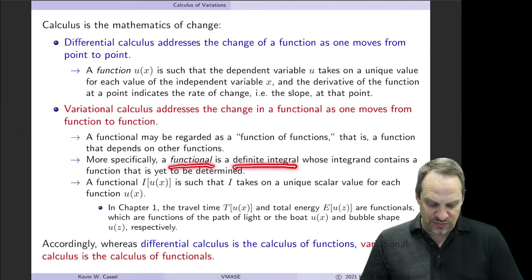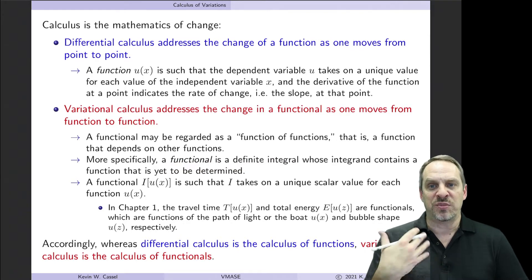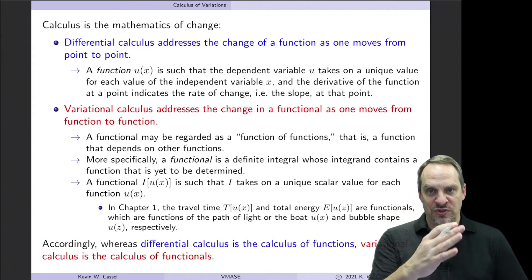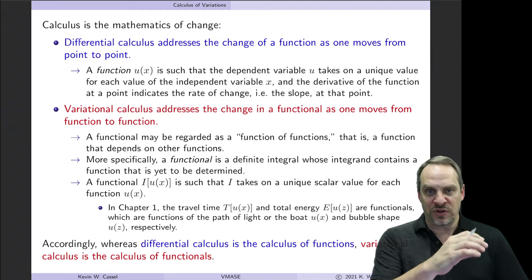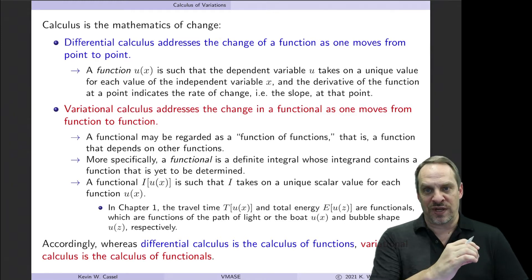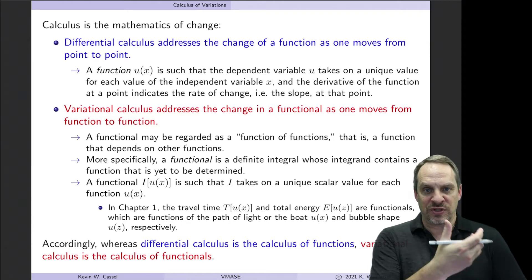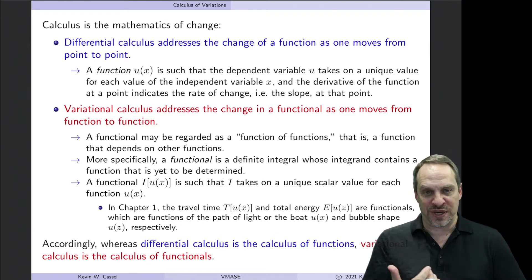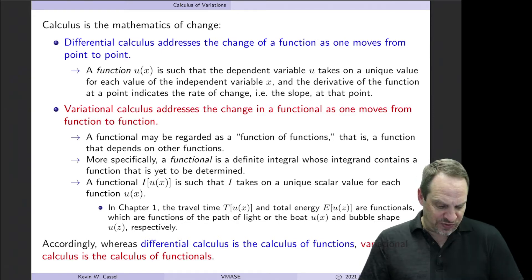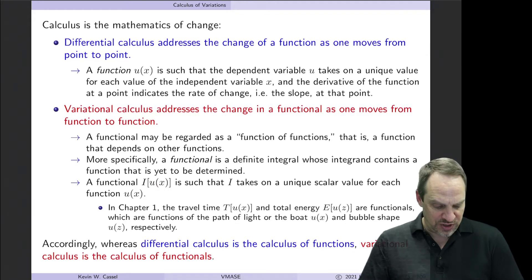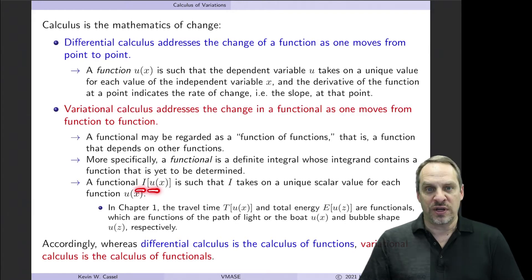More specifically, a functional is a definite integral whose integrand contains some unknown function and typically some of its derivatives. It's this definite integral of some integrand, capital F, involving our function u of x. Once we know u of x, we could evaluate the definite integral and get the value of the functional. But we're looking for the function itself — that u of x — that minimizes or maximizes our functional. A functional will be denoted by capital I, and we'll always use square brackets to indicate the function arguments.